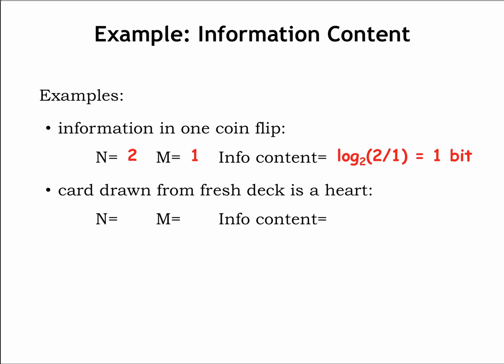Reviewing the example from the previous slide, learning that a card drawn from a fresh deck is a heart gives us log base 2 of 52 over 13, or 2 bits of information. Again this makes sense: it would take us two bits to encode which of the four possible card suits had turned up.